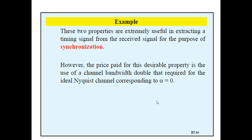These two properties are extremely useful in extracting a timing signal from the received signal for the purpose of synchronization, which will be discussed later. However, the price paid for these desirable properties is the use of channel bandwidth double that required for the ideal Nyquist channel (corresponding to alpha equals 0). With this, we have completed the topics of inter-symbol interference, pulse shaping, and the raised cosine spectrum, concluding the baseband pulse transmission unit. In the next lecture, we will discuss passband transmission of pulses, also called digital modulation techniques. Thank you.